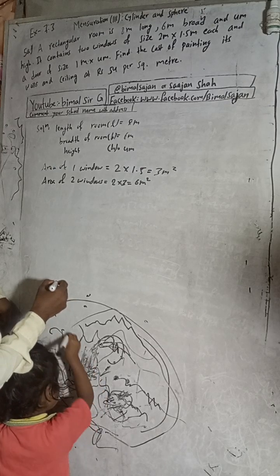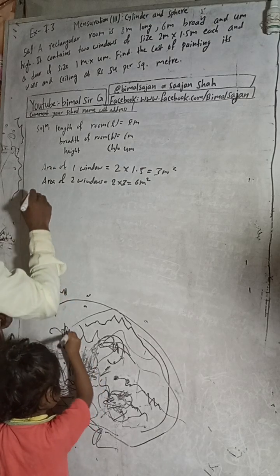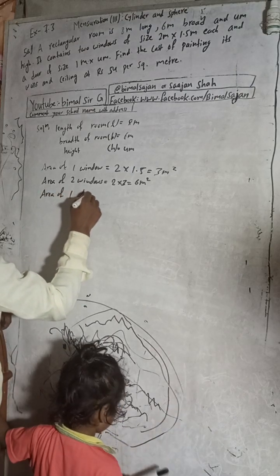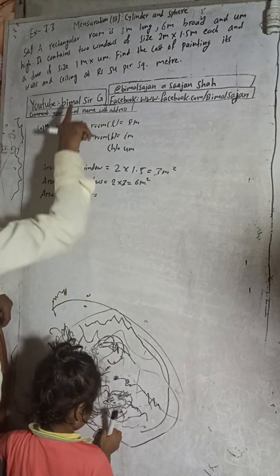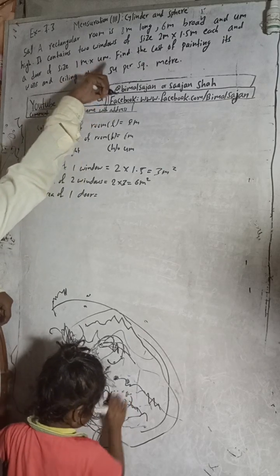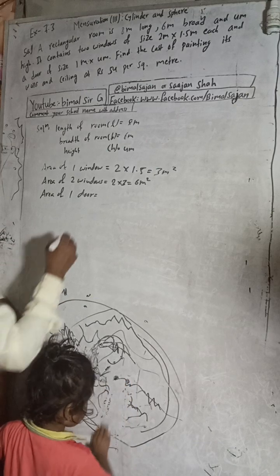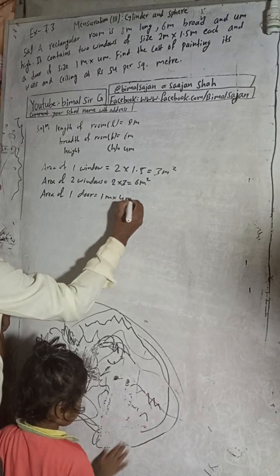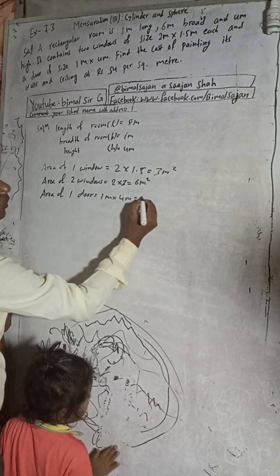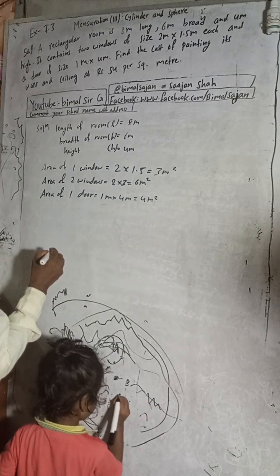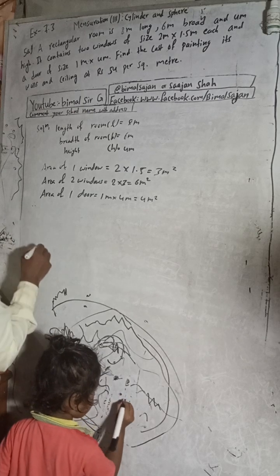And a door of size - area of door will be how much? This is 1 meter length and 4 meters, so 1 into 4 meter square.